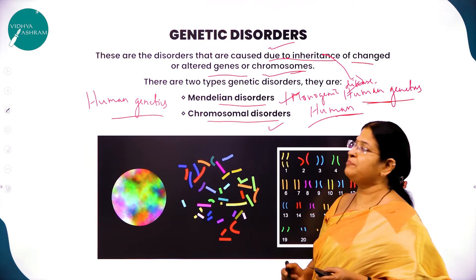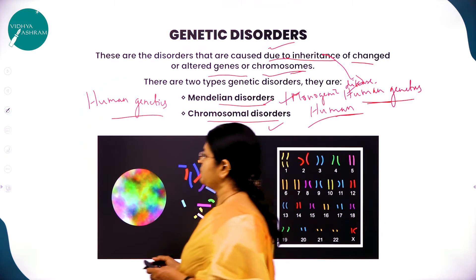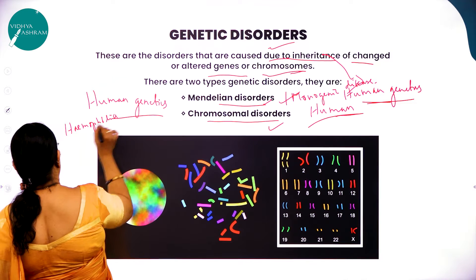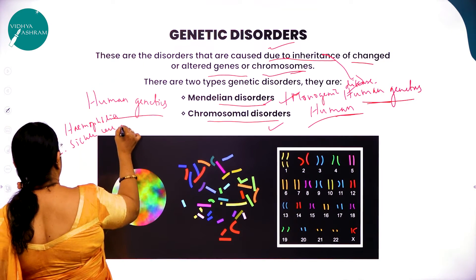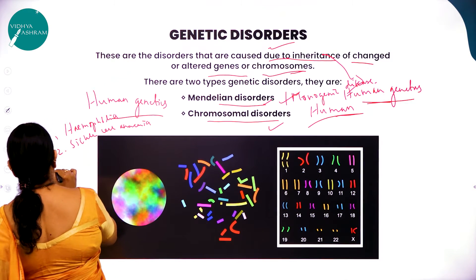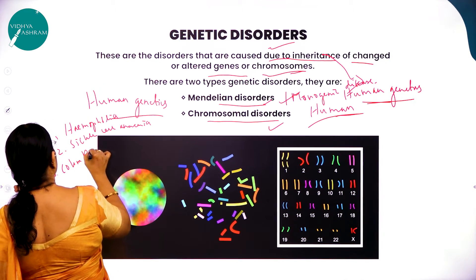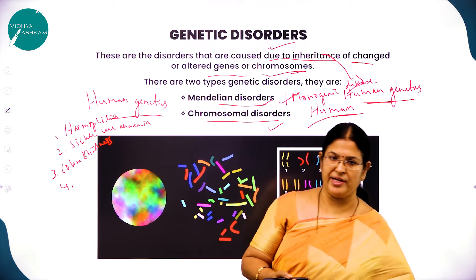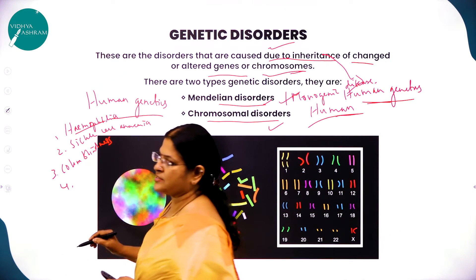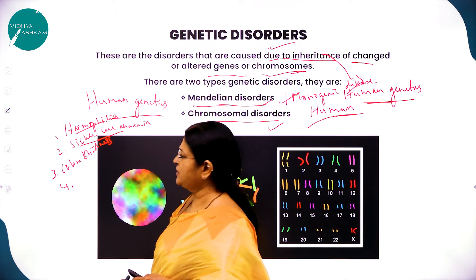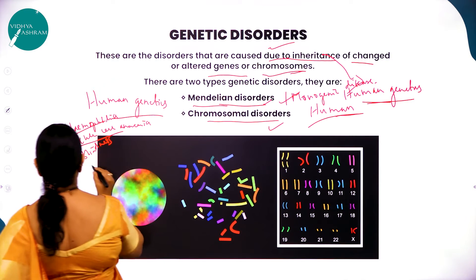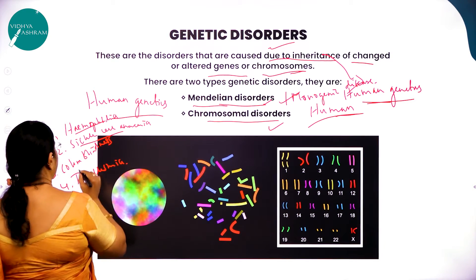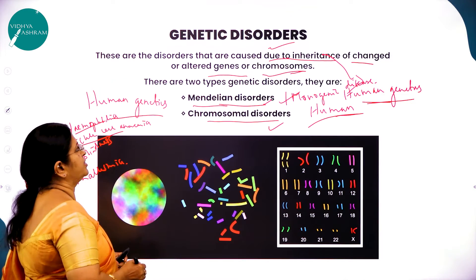Mendelian disorder is also called monogenic disease. Examples of Mendelian disorders include hemophilia, sickle cell anemia, color blindness — where a person is not able to distinguish red and green colors — and thalassemia.